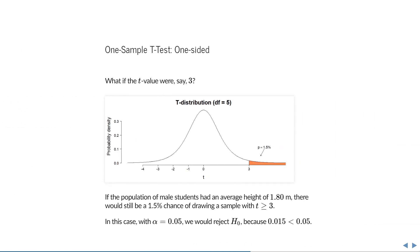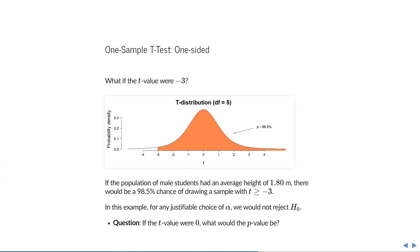What if the t-value were larger, say 3? Then very simply, it would encompass a smaller percentage of the total surface area — in this case 1.5%. In that case, if we have the same alpha of 0.05, we would reject the null hypothesis because the p-value is smaller than the chosen level of significance. The t-value can also be negative, so what if it were minus 3? In this case, if we ask the same question — are men larger than 1.8 meters — then what we're really asking is what is the chance of observing a t-value that is larger than minus 3? This encompasses most of the probability distribution, 98.5%. So for any justifiable choice of alpha, we would not reject the null hypothesis in this case.